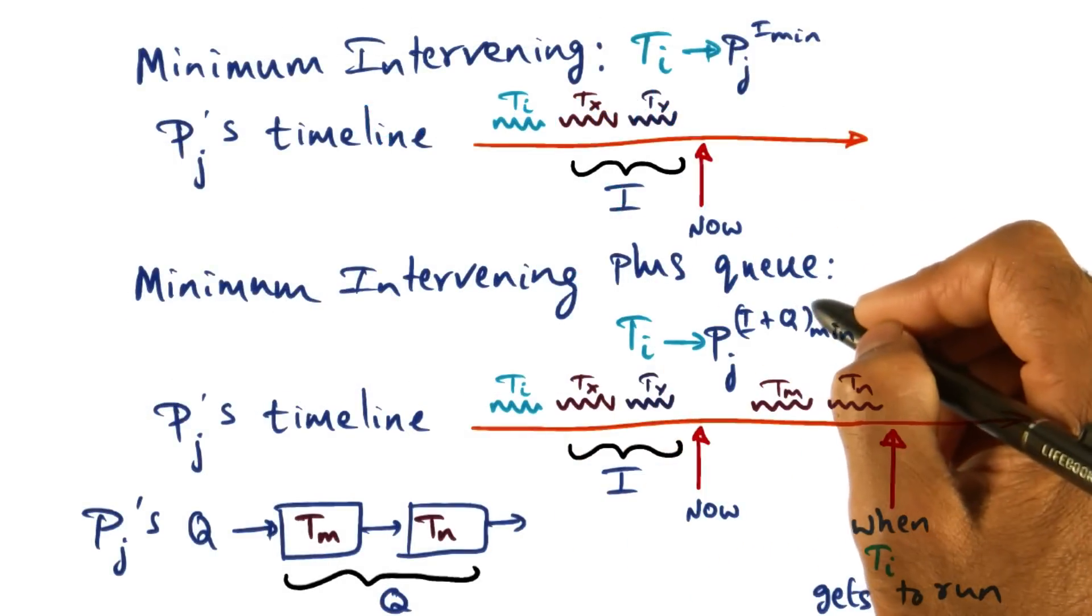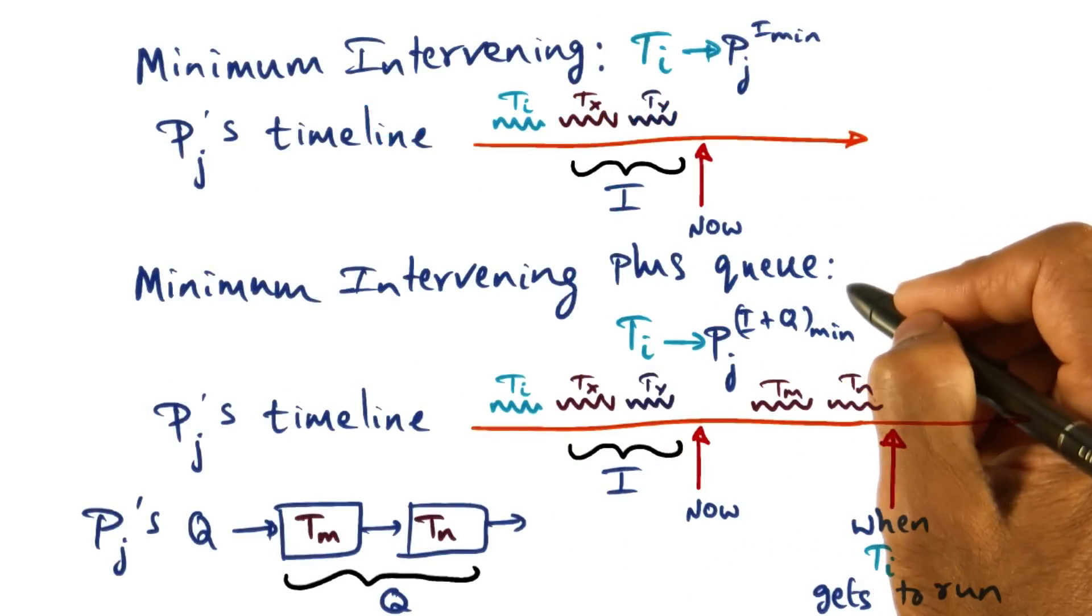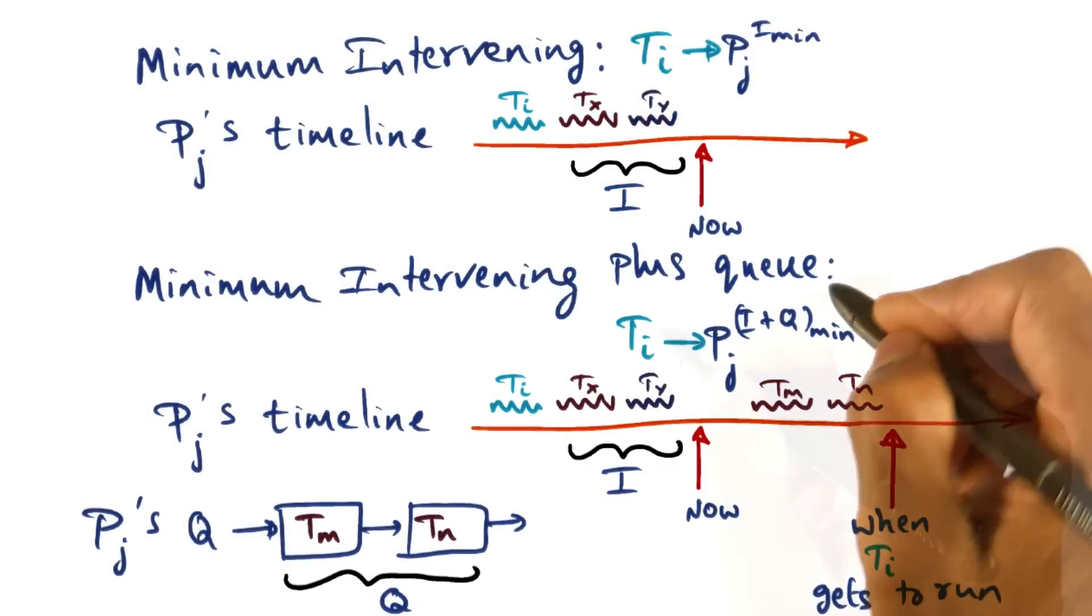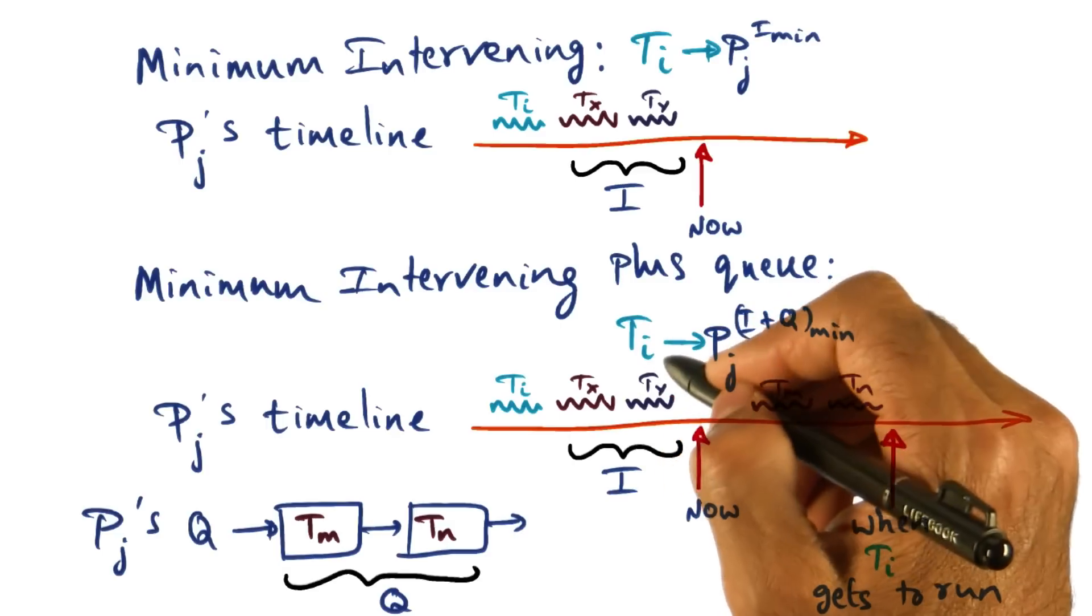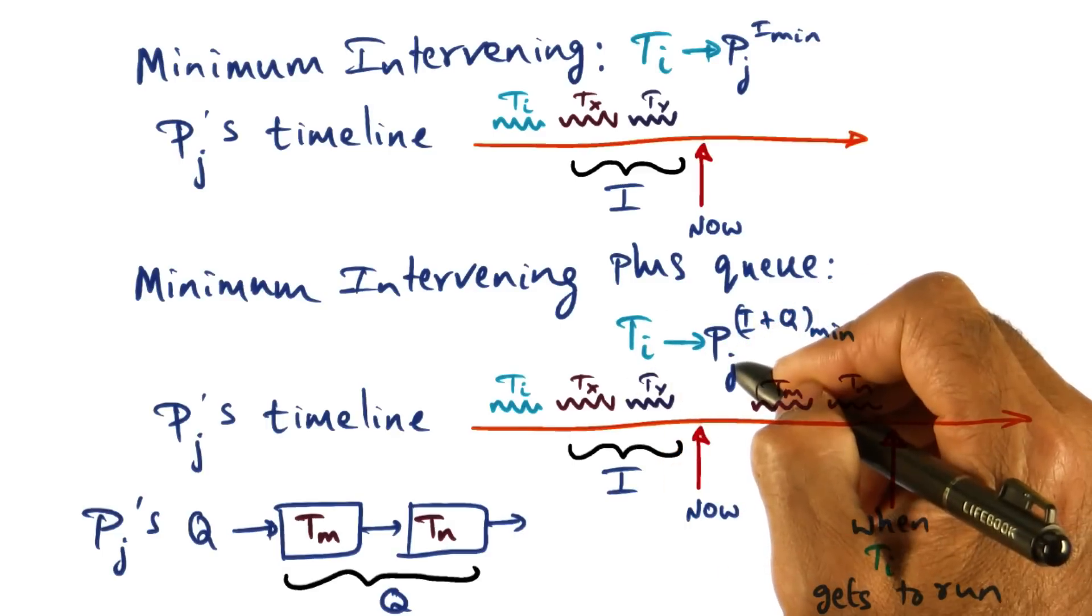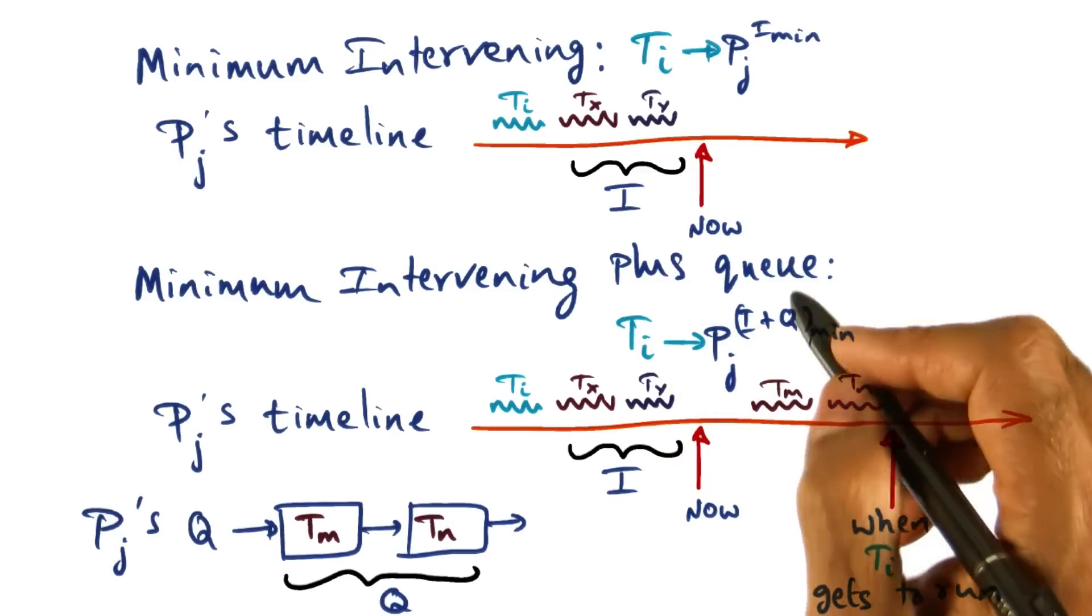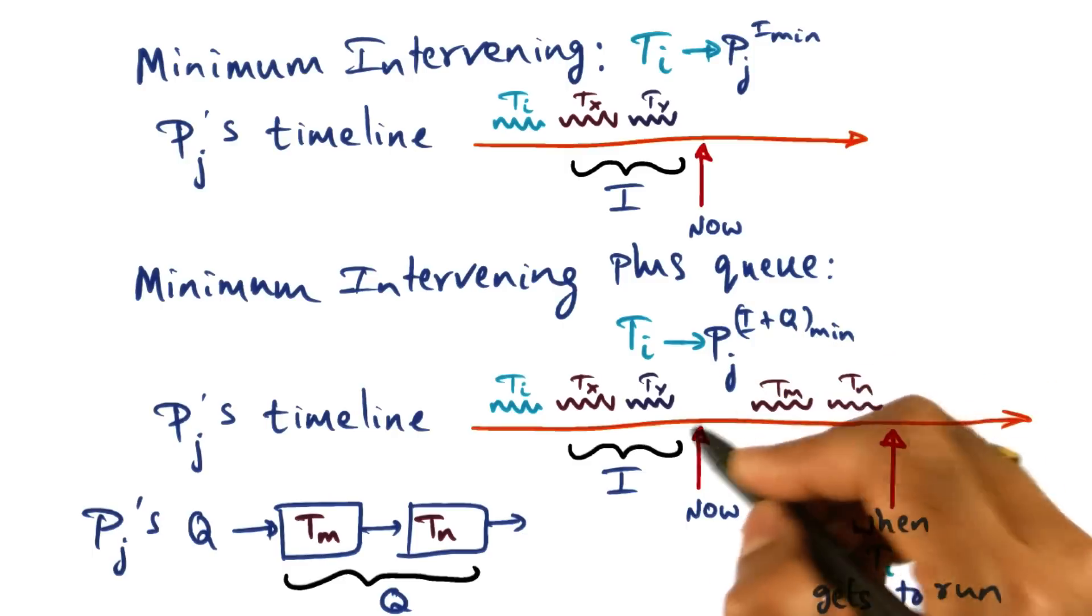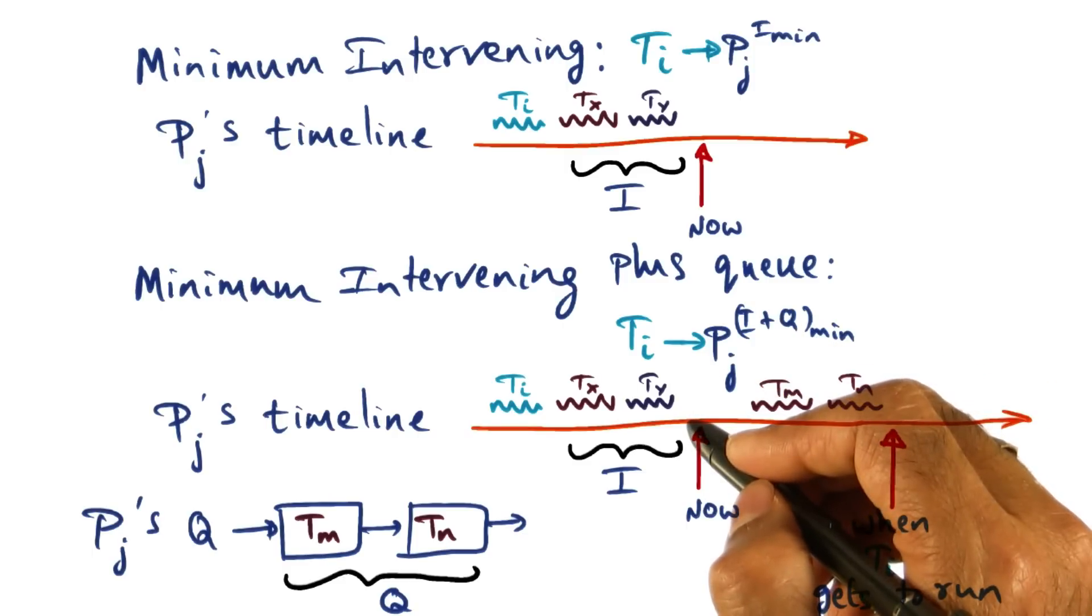So in minimum intervening scheduling plus queuing, what we are saying is it's not only the affinity index of ti with respect to a particular processor that I'm going to look at, but I'm also going to look at the queue for this particular processor. Why do we need to do that?